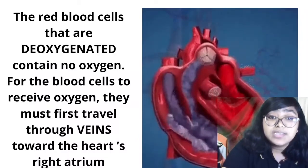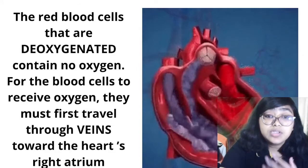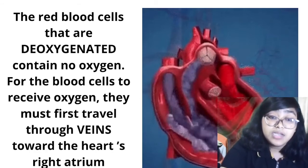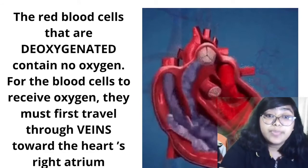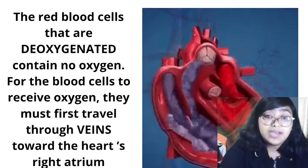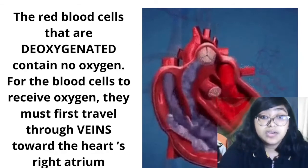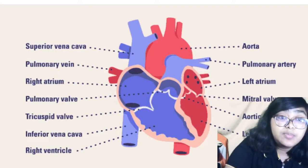Deoxygenated blood contains no oxygen. Blood becomes oxygenated when it absorbs oxygen from the lungs. After absorbing oxygen from the lungs, it becomes oxygenated blood and carries that oxygenated blood to the left atrium. The left atrium receives blood through the pulmonary vein. When the left atrium relaxes, blood is pumped into the heart, and when the left atrium contracts, blood is then pumped down into the left ventricle.